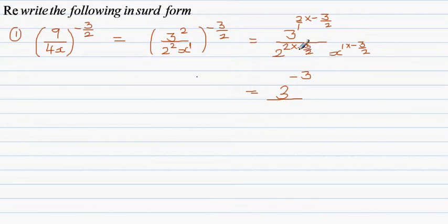Over - the same thing - 2 times negative 3 halves is 2 to the power negative 3, times x to the power negative 3 halves. 1 times negative 3 halves is negative 3 halves.